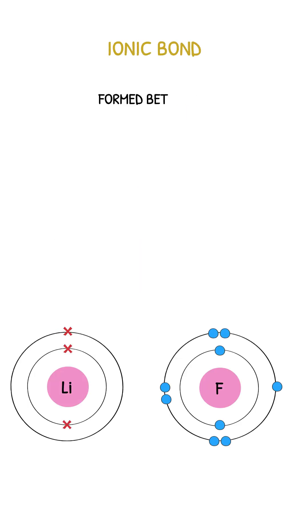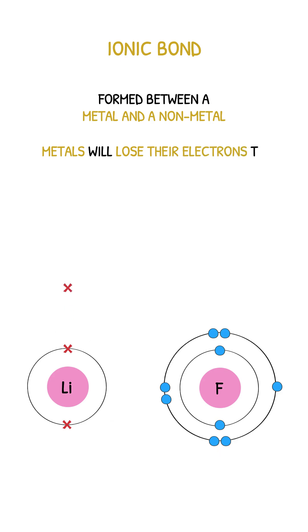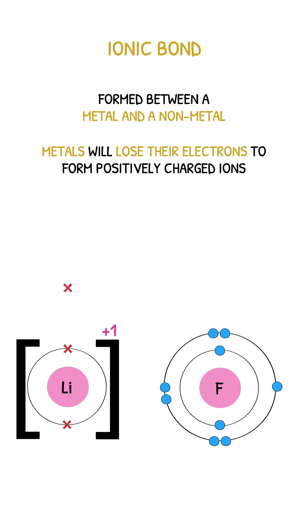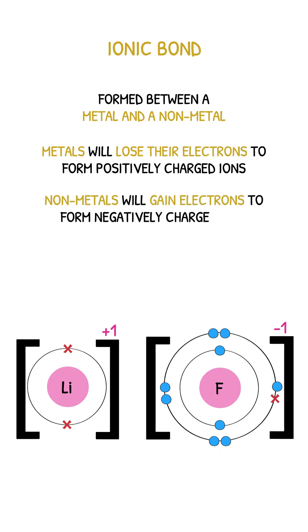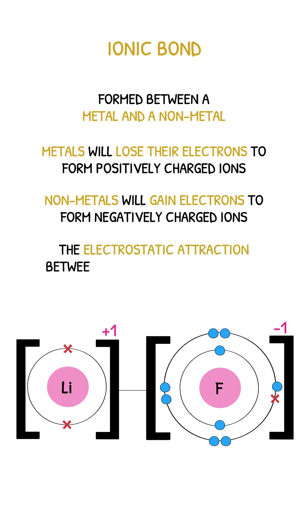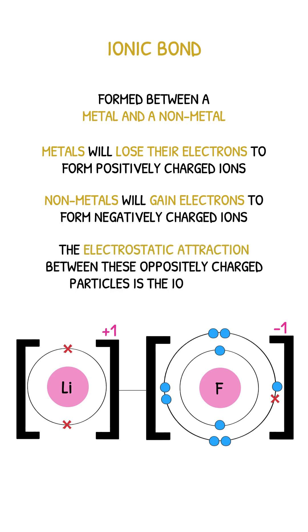Ionic bonds are formed between metals and non-metals. Metal atoms will lose electrons to form positive ions, and non-metals will gain electrons to form negative ions. The electrostatic attraction between these oppositely charged ions is the ionic bond.